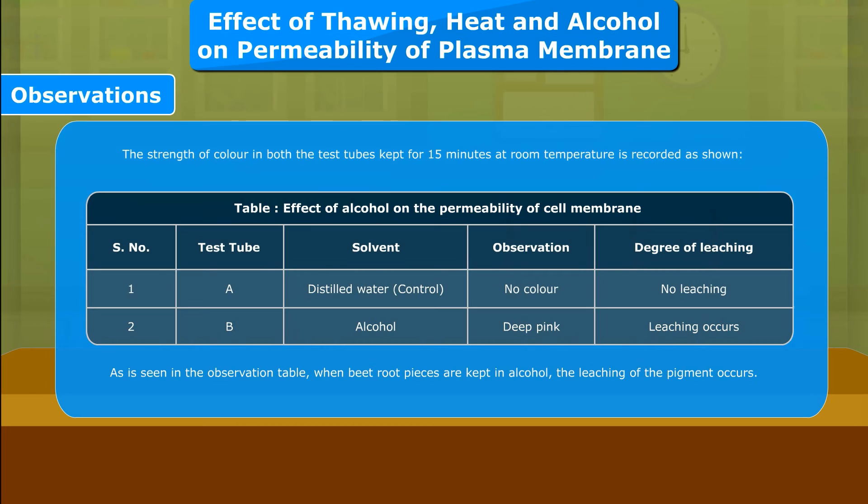As seen in the observation table, when beetroot pieces are kept in alcohol, the leaching of the pigment occurs.